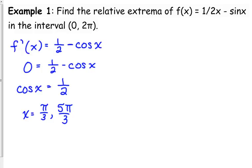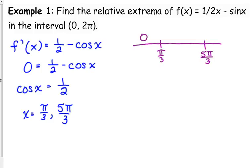We're going to use our first derivative test to determine whether those are relative maximums or relative minimums. I've got π/3 and 5π/3, so I'm going to pick really easy numbers in terms of evaluating the trig function. I'm going to use 0 because zero is always handy. Zero is less than π/3; a really easy number between π/3 and 5π/3 would be π. And then bigger than 5π/3 is 2π.